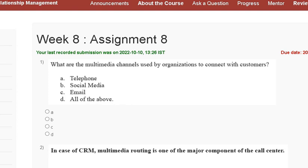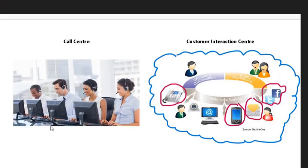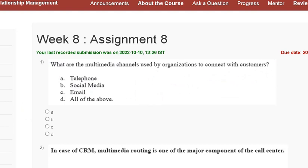The explanation for question number one is here. The customer interaction center uses telephone, mobile phone, email, and social media. So the correct answer for question number one is option D — all of the above — that means telephone, social media, and email.